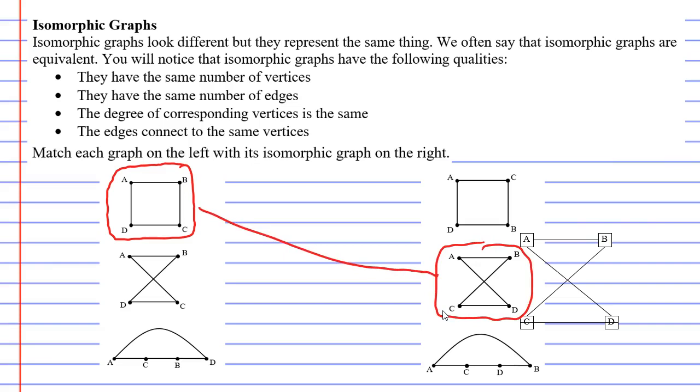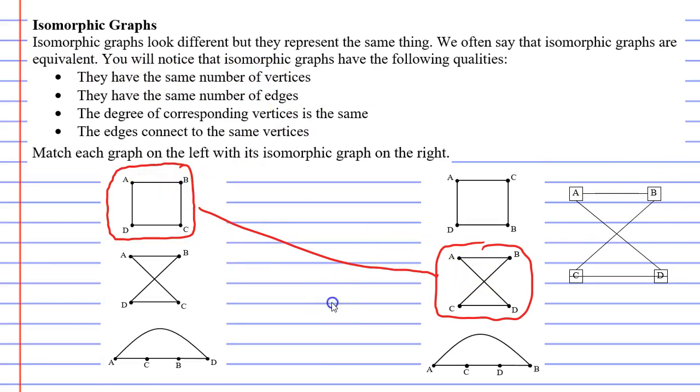So how can we double check this? Well, I have some dot points that can help you double check these things. First dot point says they have the same number of vertices. They both have four vertices. So that's a tick. We'll tick that one.